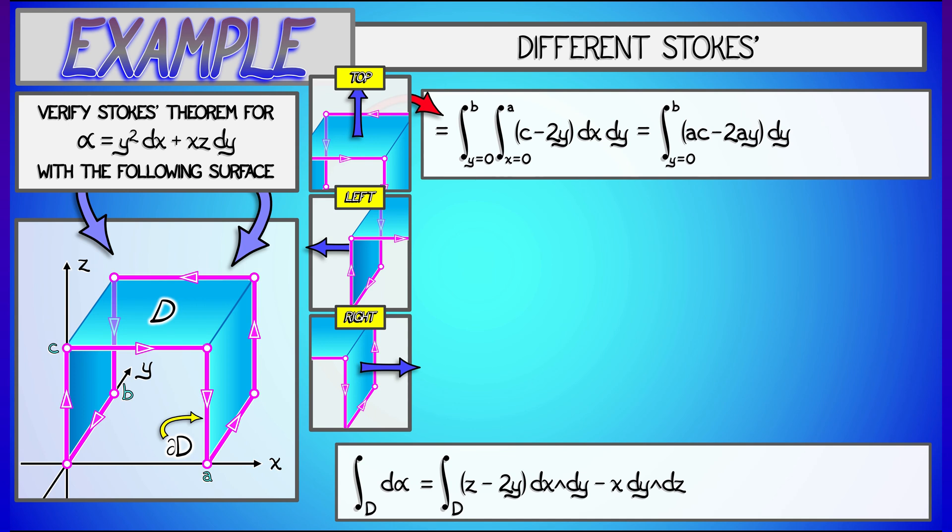Doing that inner integral first, with respect to x, gives me ac minus 2ay after evaluation. Integrating that with respect to y, as y goes from 0 to b, gives, with some simplification, abc minus ab squared. That's not so bad. Okay, that is the surface integral, or the flux of the curl, out of the top.